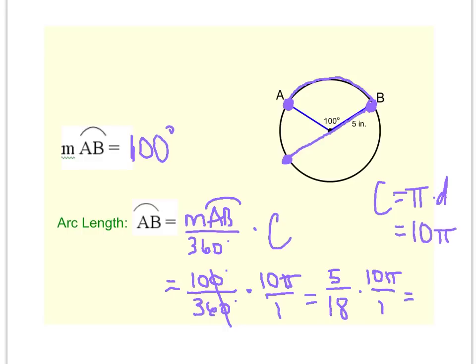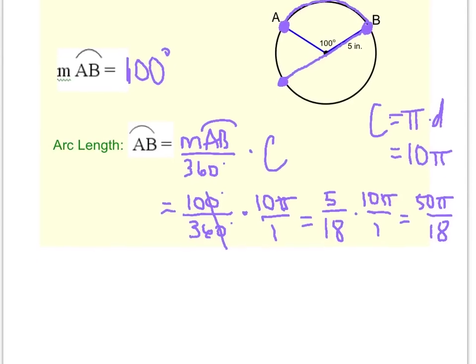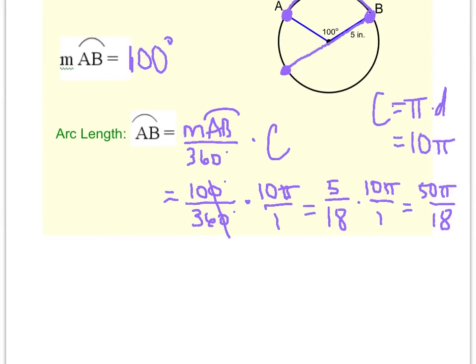Well, 50 pi over 18, we can actually reduce a little bit further. So we know that 2 also goes into both 50 and 18. So we're going to reduce this to 25 pi over 9. So we would say that this has an arc length of 25 pi over 9.